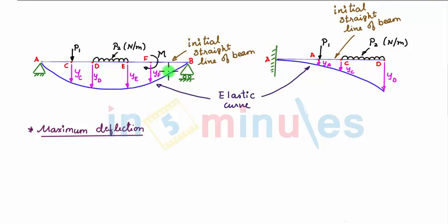So in the simply supported beam we see that there is one point somewhere in between point D and E where your deflection is maximum and we denote this maximum deflection by Y suffix M. So let us define a point where deflection is maximum as point G. Similarly in the cantilever beam we see that your deflection at point D, YD, is your maximum deflection.